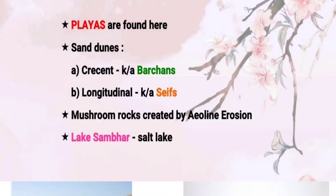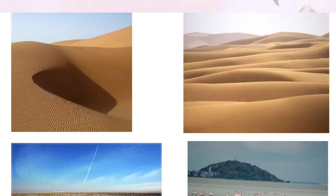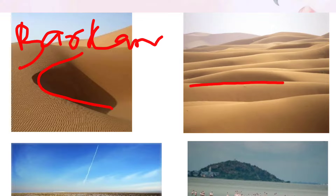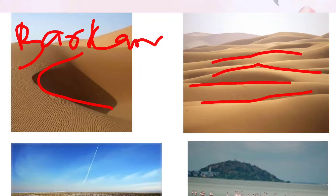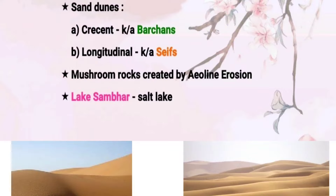Talking about sand dunes, in the desert of India you will see two types of sand dunes. One is in the shape of a crescent and another is in the shape of a longitudinal form. The crescent-shaped ones are called barchans, and the longitudinal or linear sand dune formations are known as seifs. As you can see in the diagram, the crescent shape is the barchan and the linear formation is the seif.